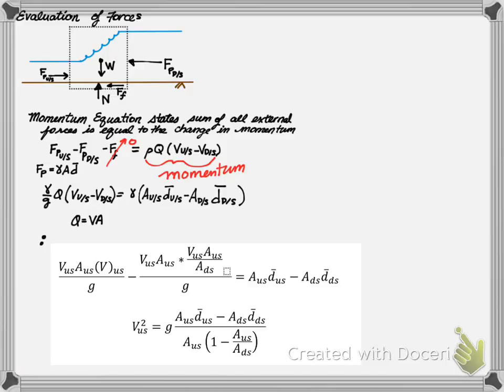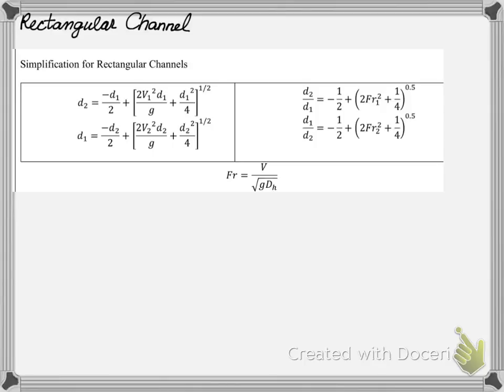But in a rectangular channel, there is a shortcut. The following equation provides the shortcut for a rectangular channel. This is only valid if the channel has no side slopes, and therefore, is vertical. You can calculate the upstream or downstream depths, respectively.